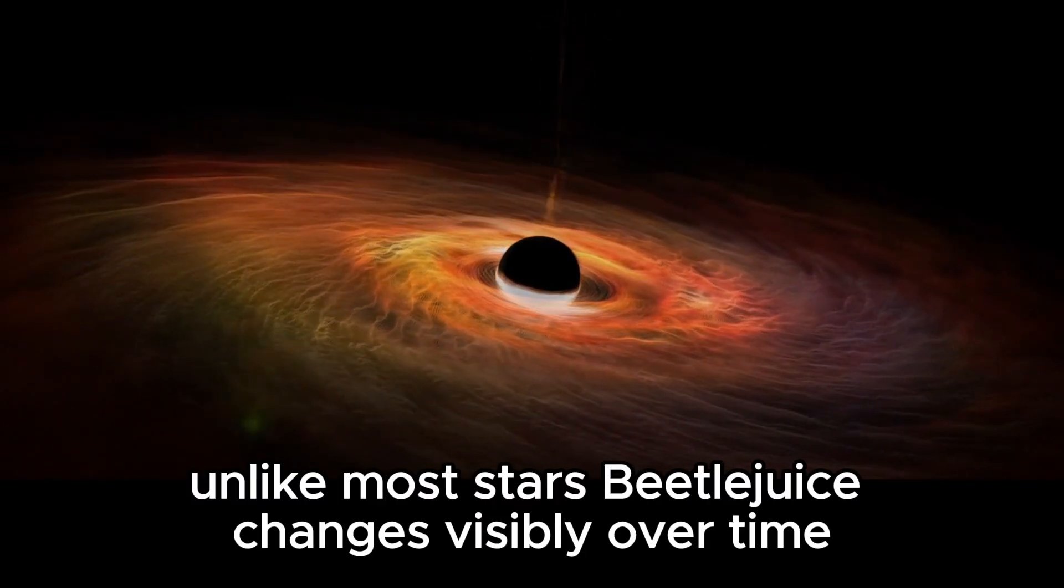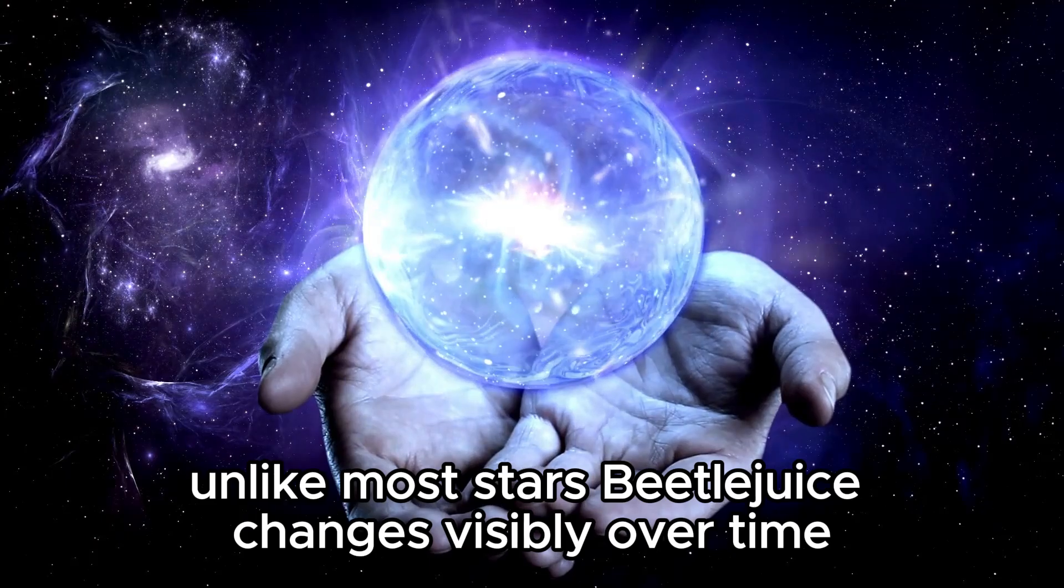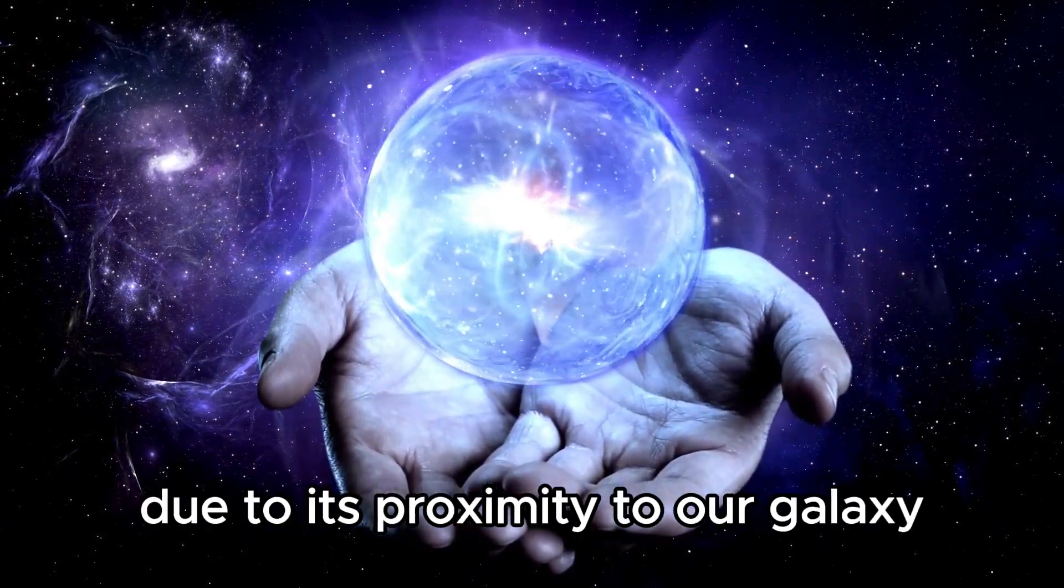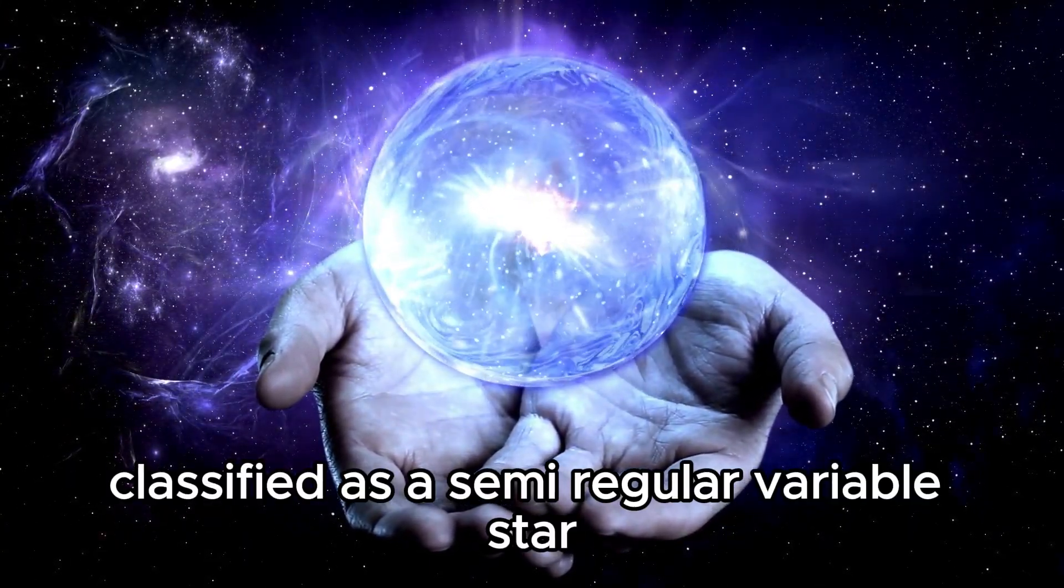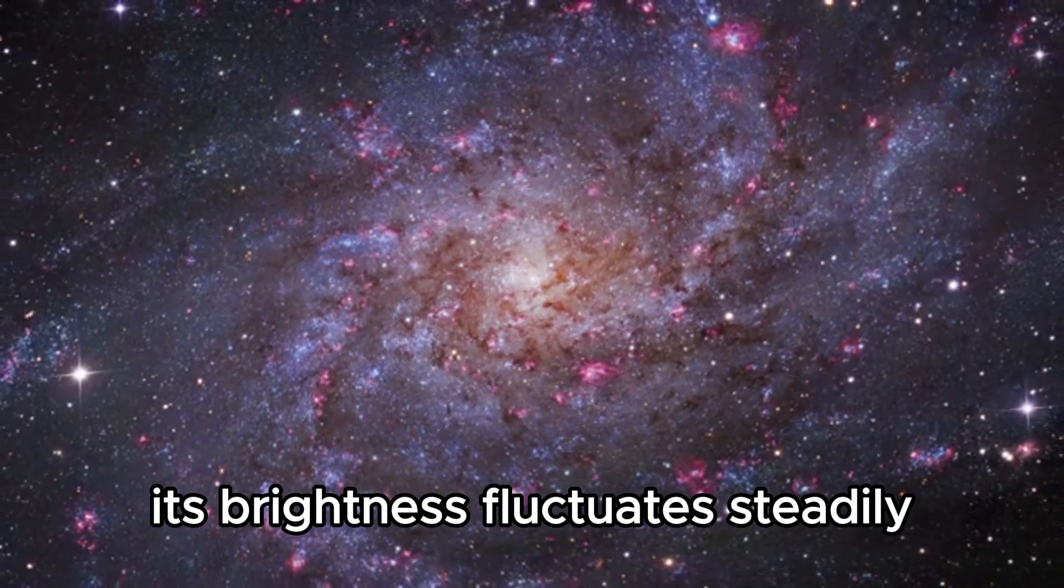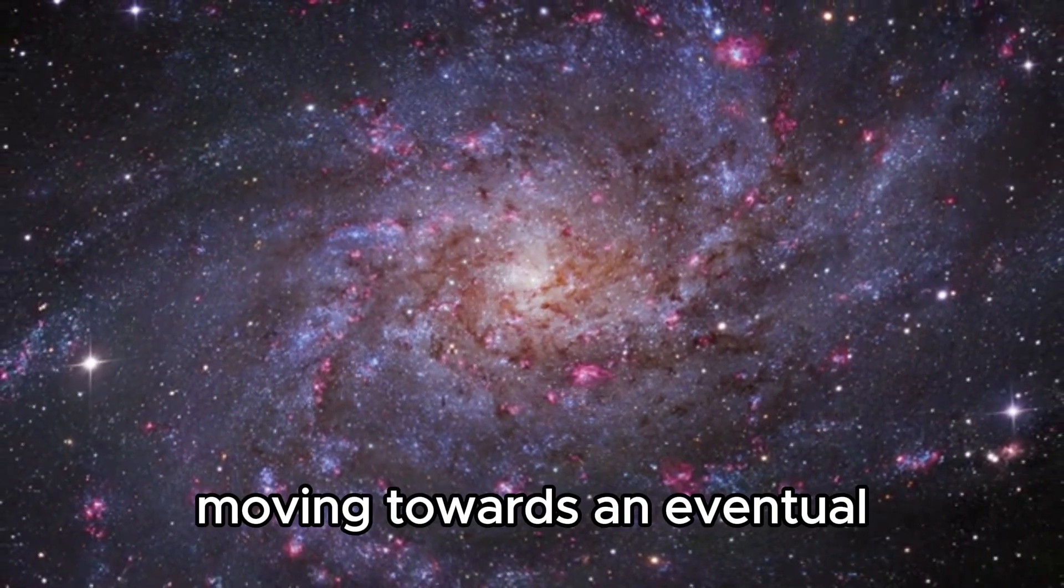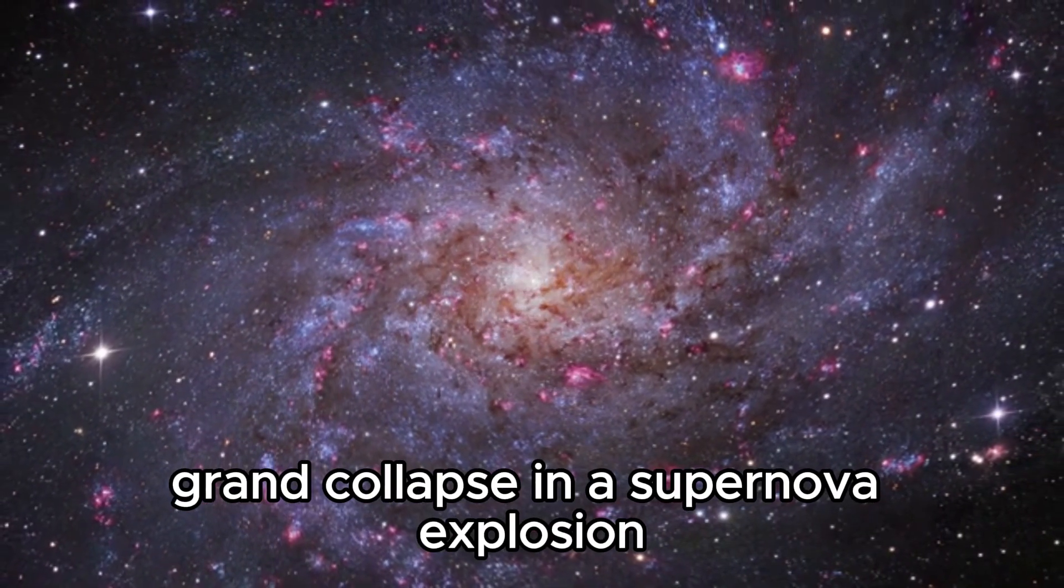Unlike most stars, Betelgeuse changes visibly over time due to its proximity to our galaxy. Classified as a semi-regular variable star, its brightness fluctuates steadily, moving towards an eventual grand collapse in a supernova explosion.